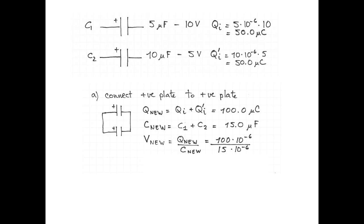For kicks, let's calculate the new potential difference across the arrangement of two capacitors. We take our new charge, divide by the capacitance of our new arrangement, and we get 6.67 volts. Now let's calculate the old energy and the new energy and see how much we lost or gained.